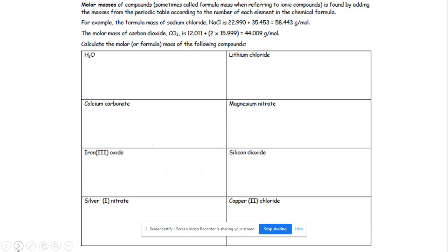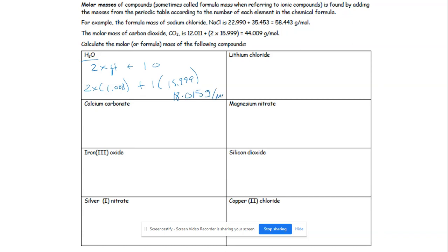Now we're going to get a little trickier and look at compounds. H₂O, water, has two hydrogens and one oxygen. The mass of hydrogen on the periodic table is 1.008, and oxygen is 15.999. Using the calculator: two times 1.008 plus 15.999 gives us 18.015 grams per mole — the molar mass of water.